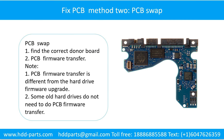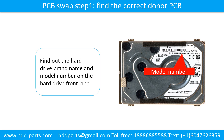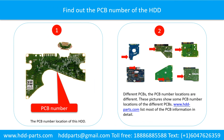Fixing the hard drive printed circuit board — Method 2: The printed circuit board swap. Step 1: Find the correct donor printed circuit board. Find out the hard drive brand name and model number on the hard drive front label. Find out the printed circuit board number of the hard drive. Picture one shows the printed circuit board number location of this model hard drive.